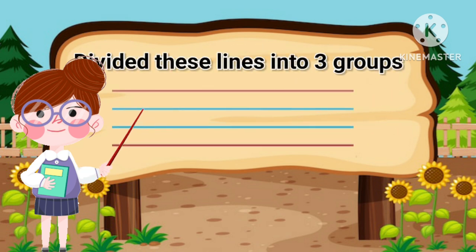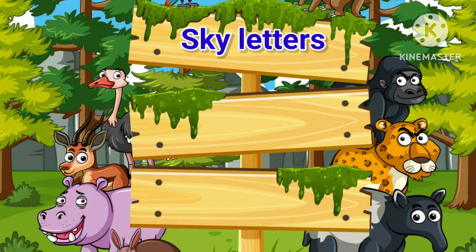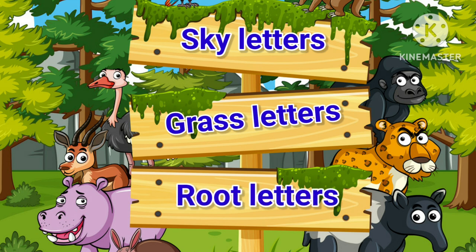We divided these lines into three groups. The first one is the sky letters group, the second one is the grass letters group, and the third one is the root letters group.